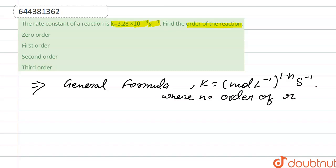The value of n must be one for mol liter inverse 1 minus n second inverse to become second inverse.